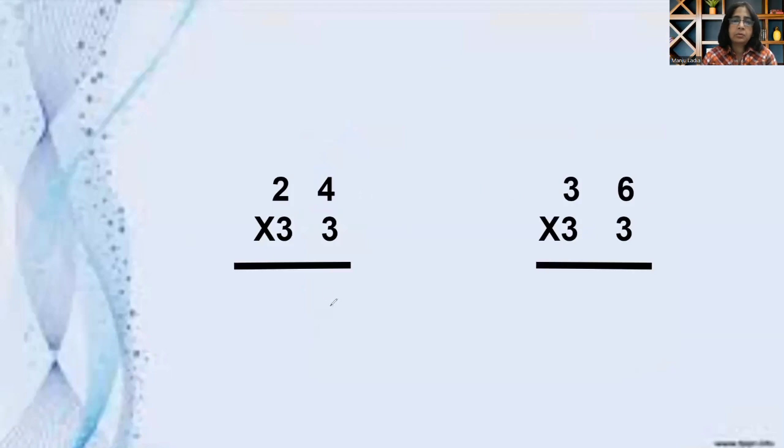Multiplication by 24 and 33. Any number by 33, the process is same as I have taught in the 22. Just 3 into 2, 6, and put a backslash and leave this middle place, and then again 4, 3 is 12.